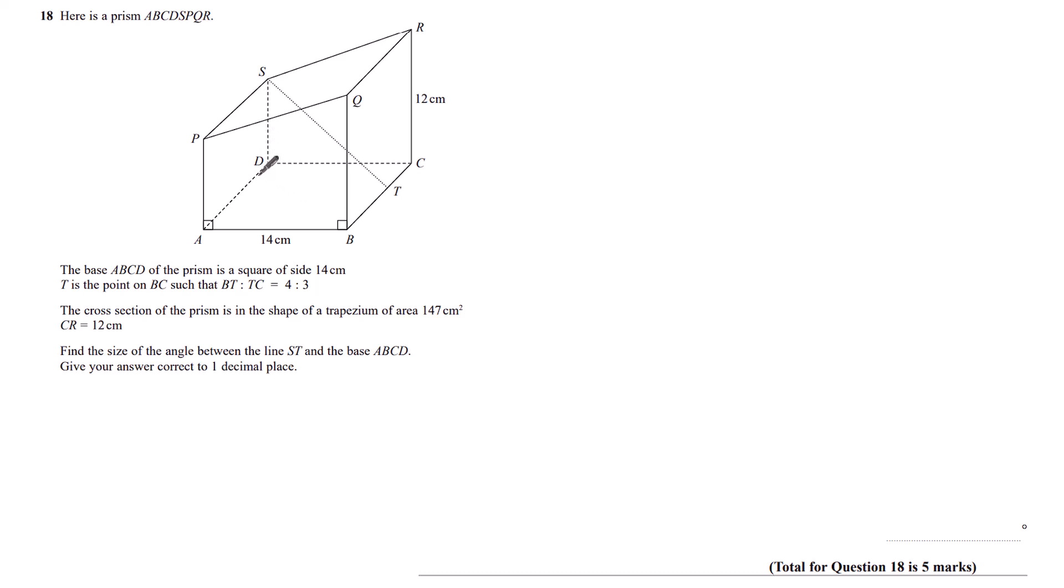So firstly, let's join up D and T. Here I have a right angle triangle, this SDT. And within this triangle, I want to find the angle between ST and the base, which is this angle here.